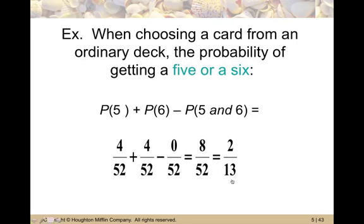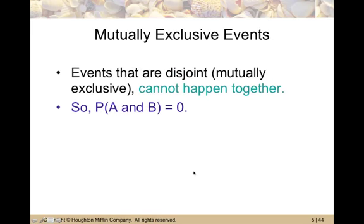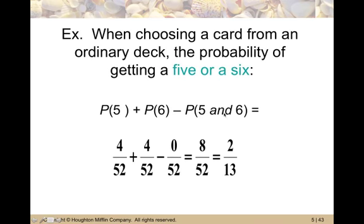When choosing a card from an ordinary deck, the probability of getting a five or a six: P(five) plus P(six) minus P(five and six). There are four fives out of 52, and four sixes out of 52 — the six of hearts, six of diamonds, six of clubs, and six of spades. How many cards are both a five and a six at the same time? None. So we subtract zero. Four plus four is eight, minus zero is still eight out of 52, which reduces to two thirteenths.